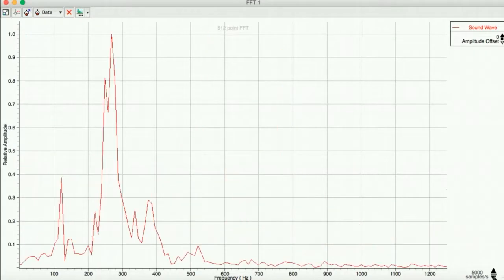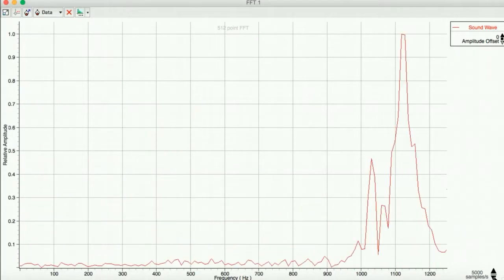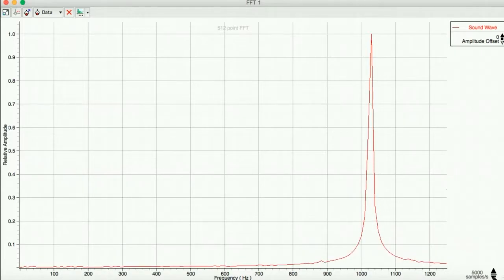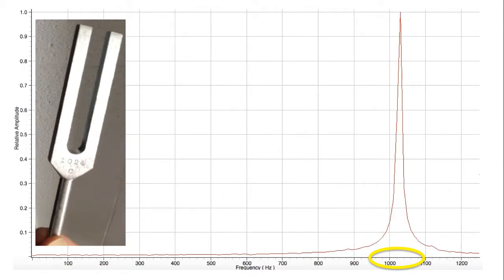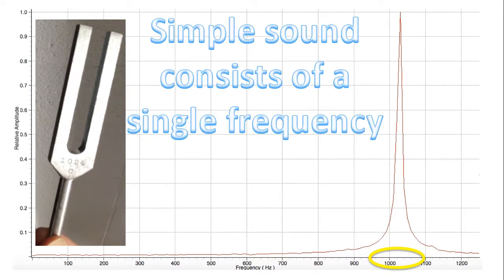Tuning fork 1024 Hertz. Notice that for the most part, the tuning fork produced only a single frequency at around 1024 Hertz. Simple sounds consist of a single frequency.